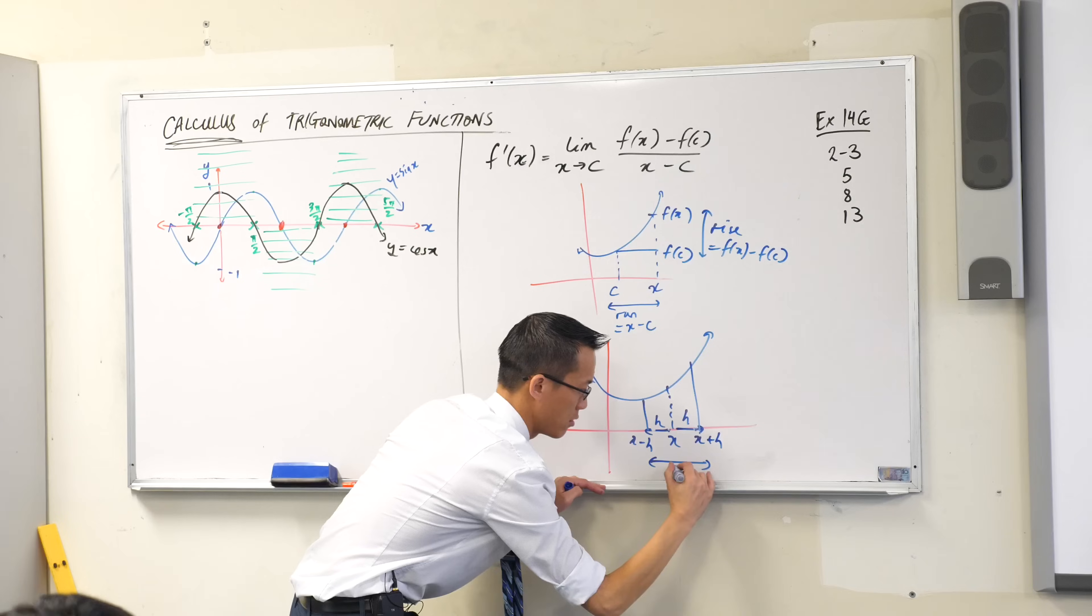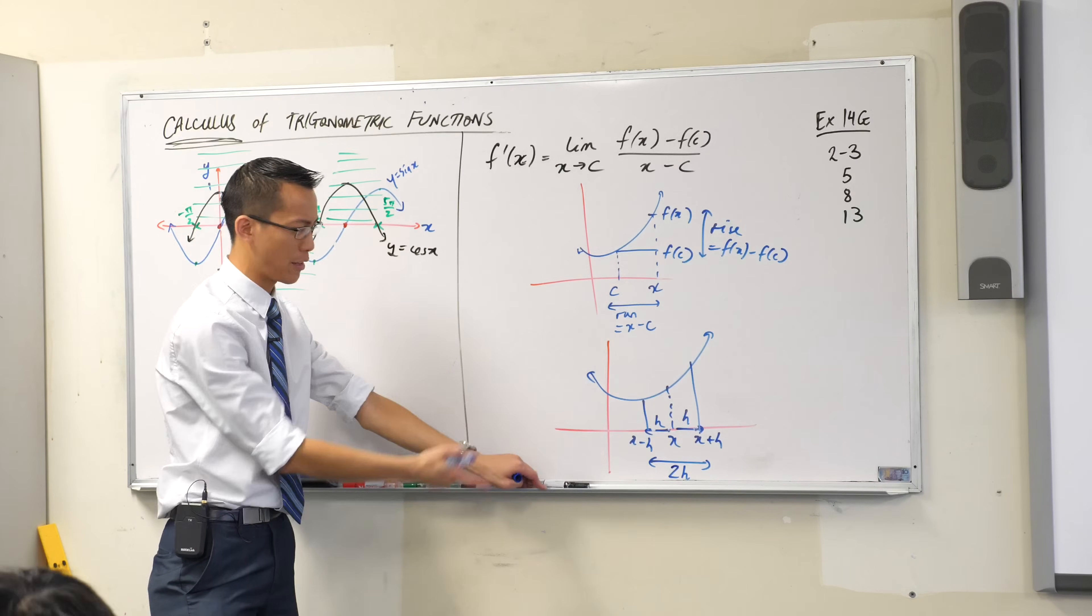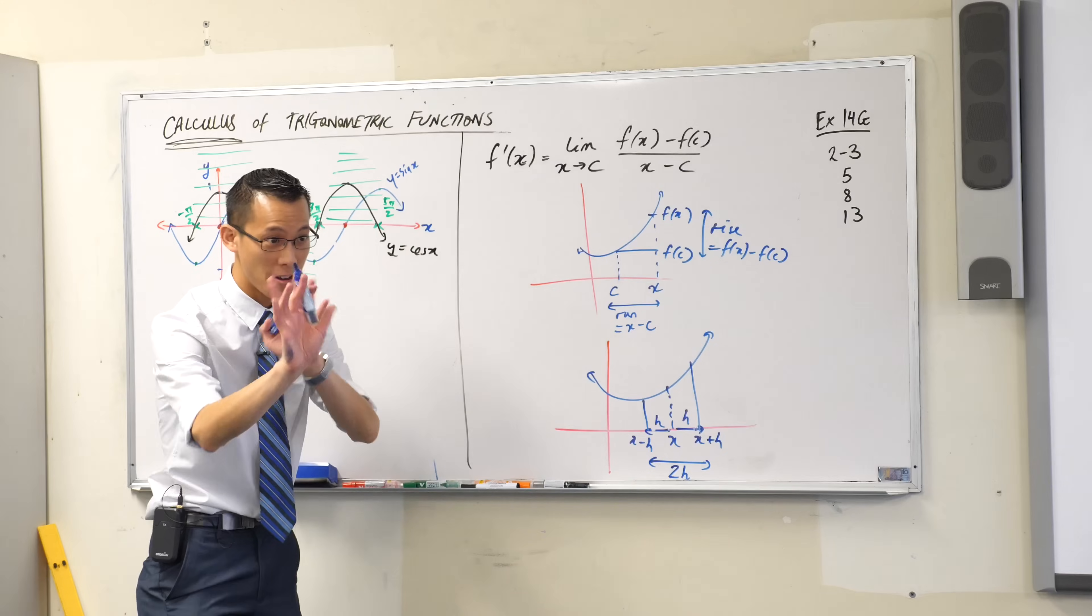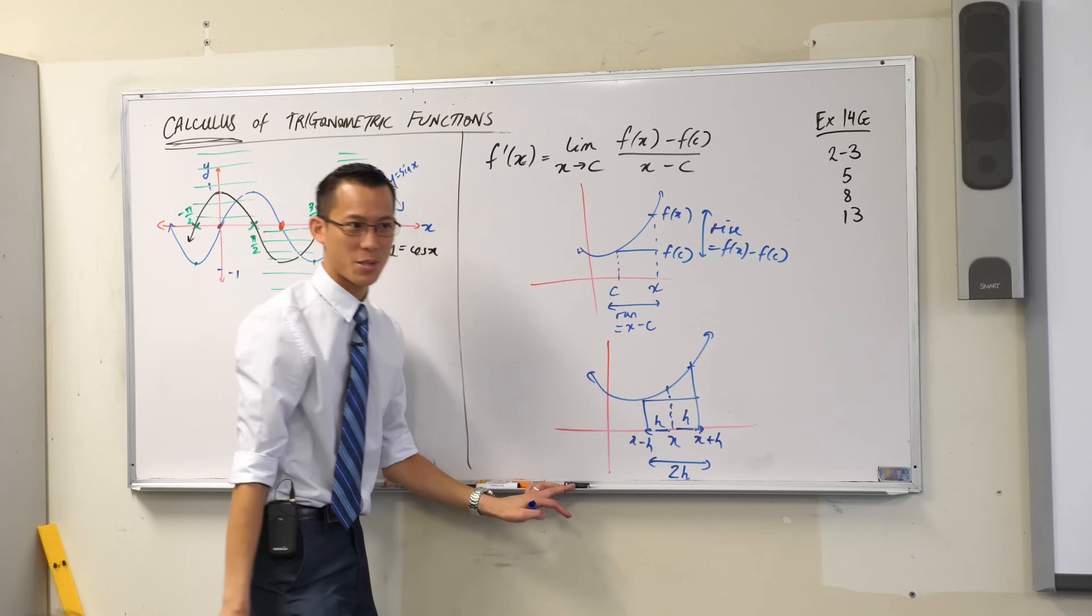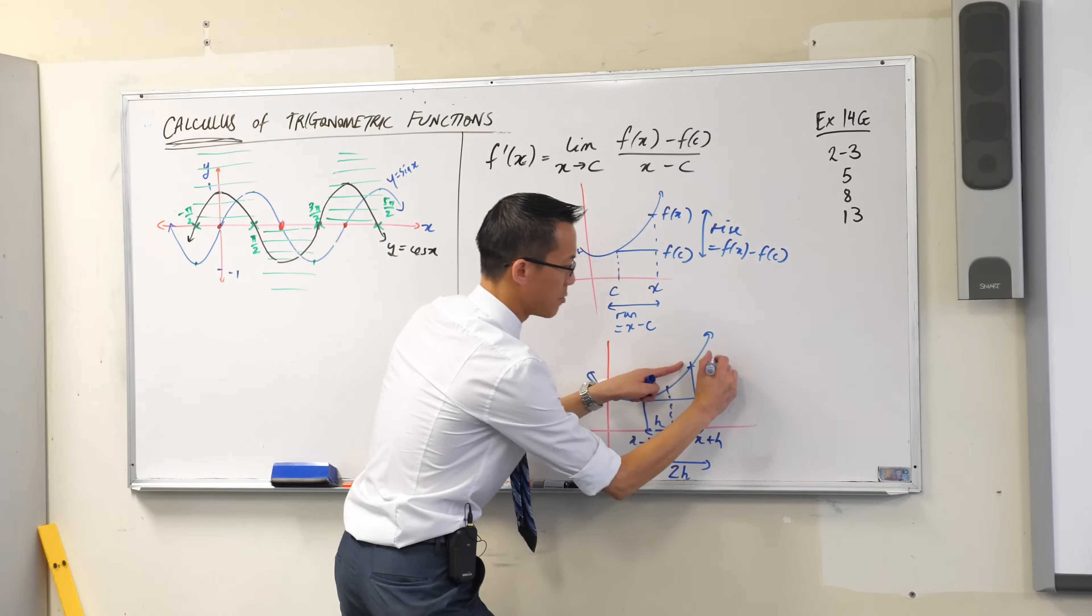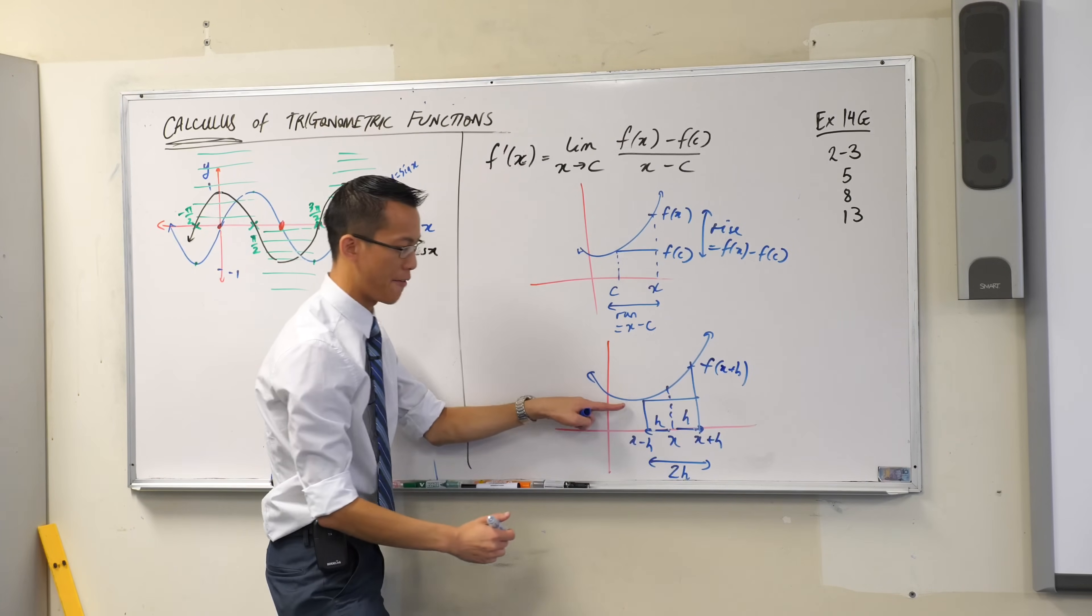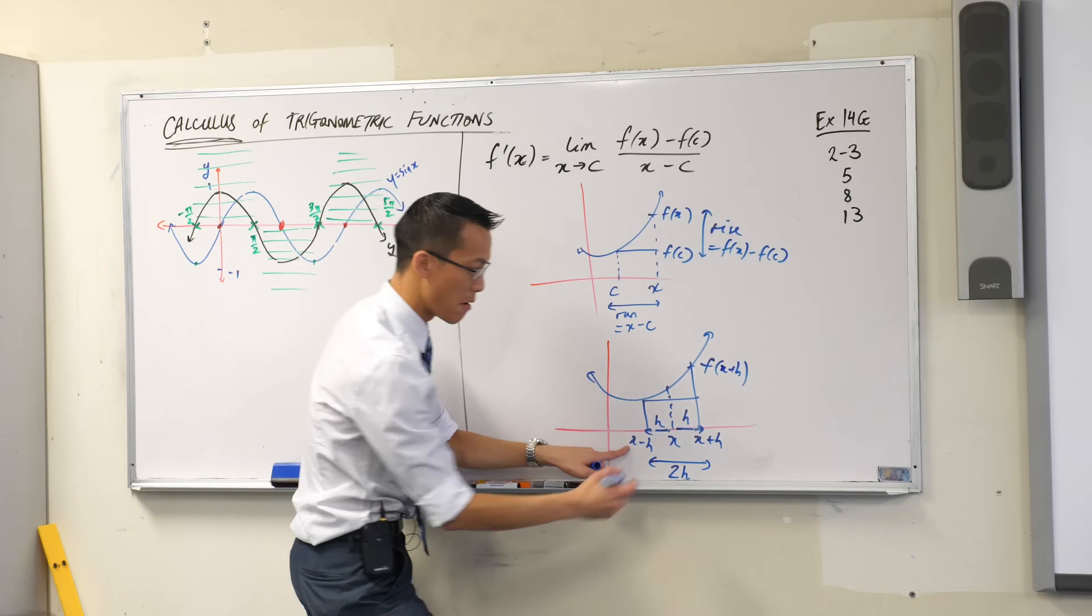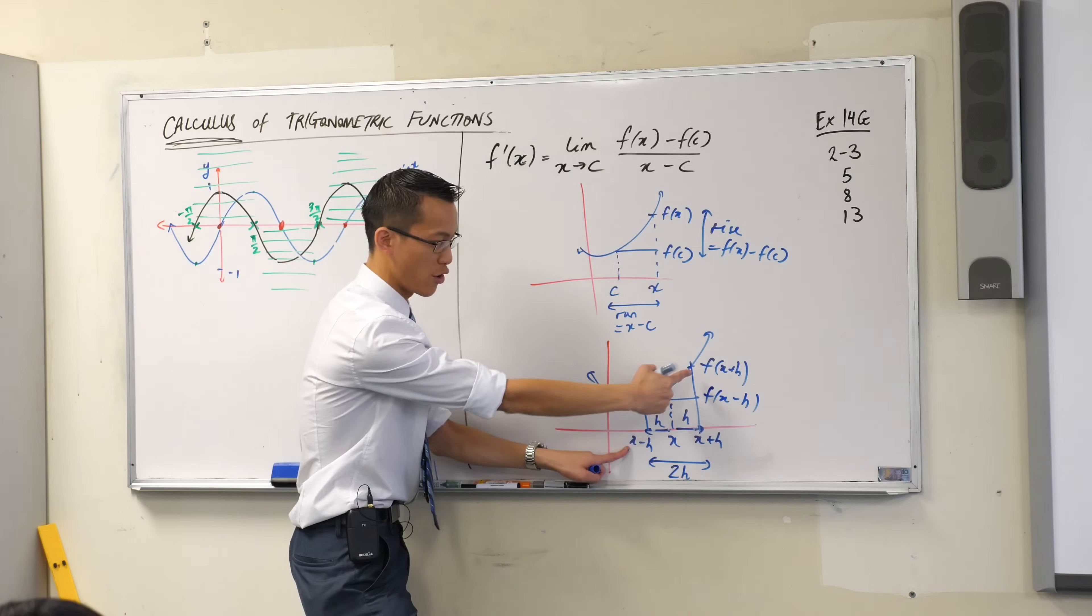You're thinking, why would you do that? Why would you make that complicated and have 2h rather than 1? Hold with me. Let's think about the rise. What's this top one going to be? f of what? x+h. What about the bottom one? f(x-h). Do you see that? That's your starting point over there. There's your ending point.